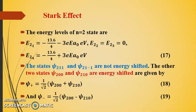So the energy levels of n equal to 2 states are E_21 that is minus 13.6 by 4. This is the unperturbed energy level minus 3Ea_0. This is the correction term. And E_24 that is minus 13.6 by 4, again unperturbed energy level plus the correction term 3Ea_0 electron volts.